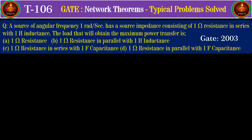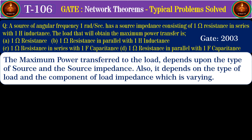First, let us solve the GATE question from 2003. It says that a source of angular frequency one radian per second has a source impedance consisting of one ohm resistance in series with one henry inductance. We are required to identify the load when the maximum power is transferred out of the given options.